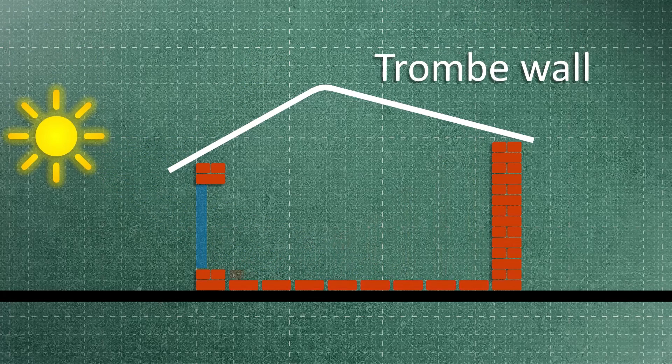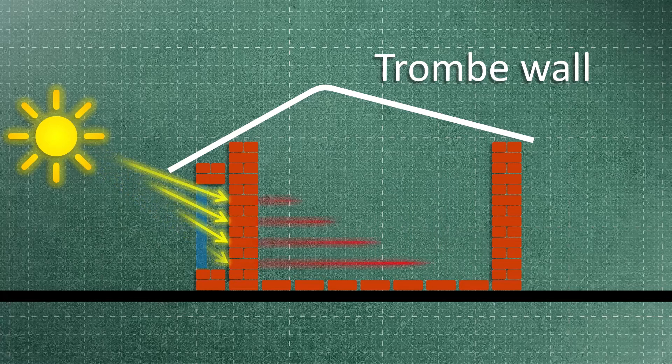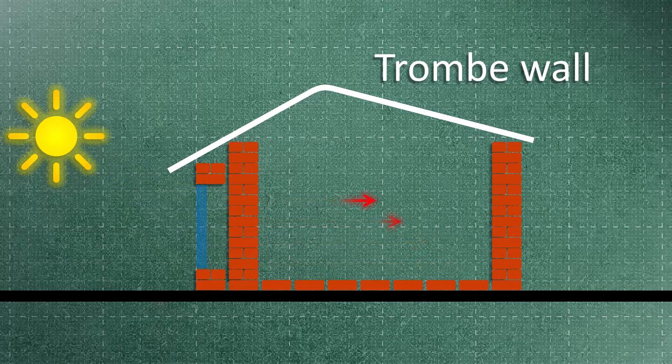The Trombe wall is one of the simplest solar passive systems. In this system, sunlight first hits a surface and then the energy is transferred to other spaces.